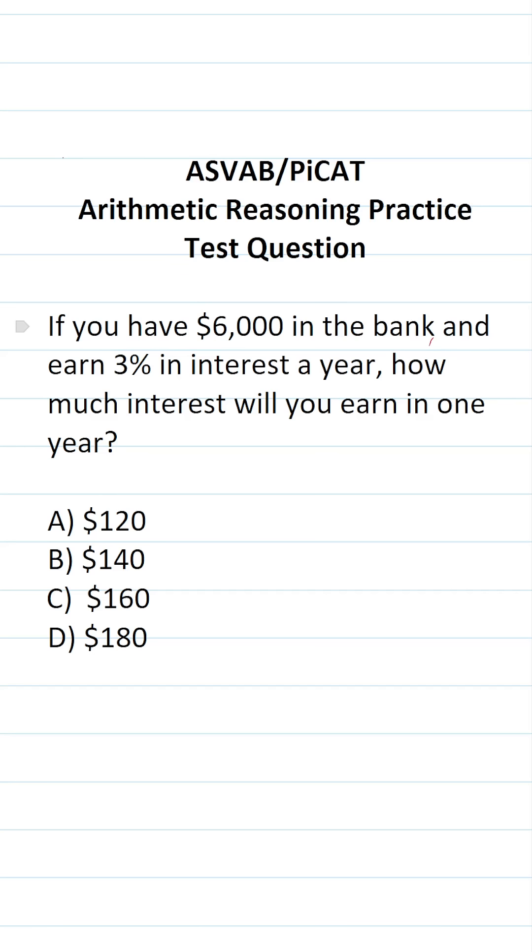On the ASVAB and PyCat, you're not given a reference sheet or a calculator. In order to answer this question, you have to know the simple interest formula, which says interest I is equal to your principal P times your interest rate R times T, which stands for time.